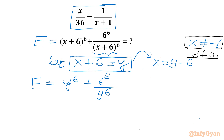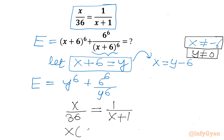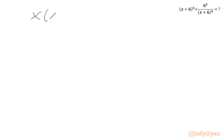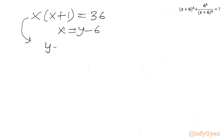Now I will write our equation: x over 36 equal to 1 over x plus 1. Cross multiplying: x times (x plus 1) equal to 36. Obviously x cannot be negative 1. Now I will substitute x equal to y minus 6. So I will be writing this equation as (y minus 6) times (y minus 6 plus 1) equal to 36.